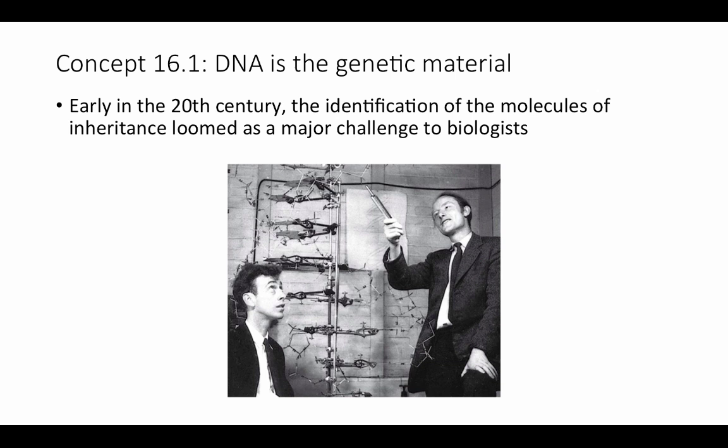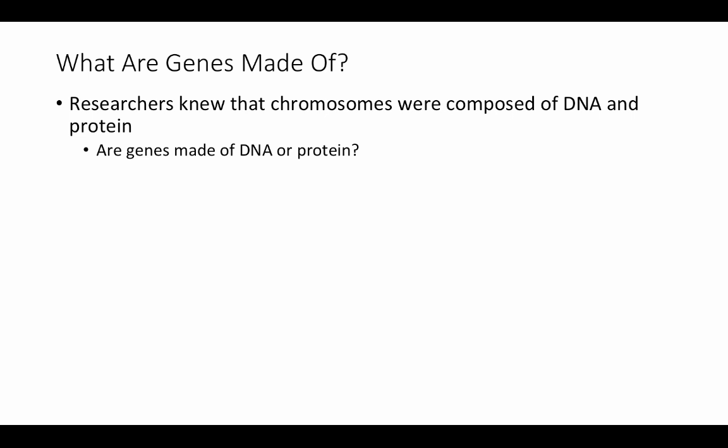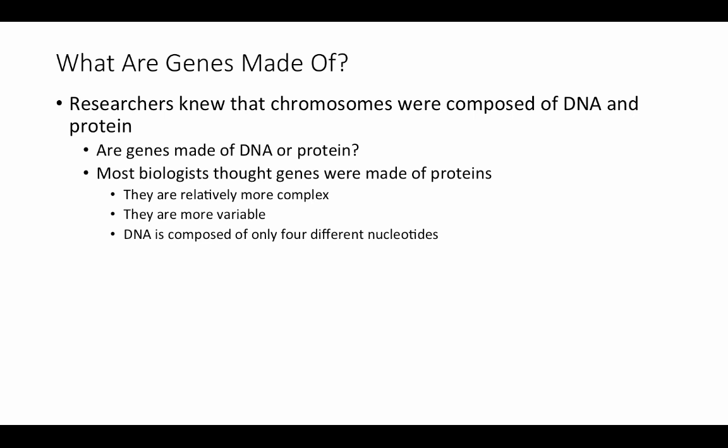How do we know that DNA is the genetic material? Early in the 20th century, identifying the molecules of inheritance was a major challenge for biologists. Why do offspring resemble their parents? Researchers had established that chromosomes were composed of DNA and protein, and that chromosomes were the units passed from parent to offspring. But what are the genes actually made of — DNA or protein?